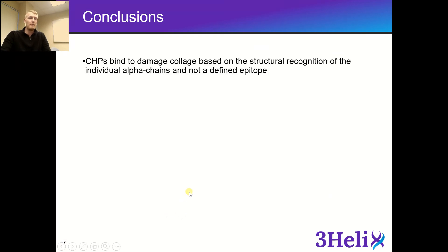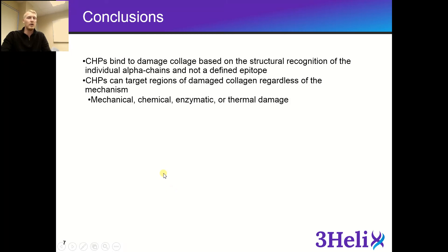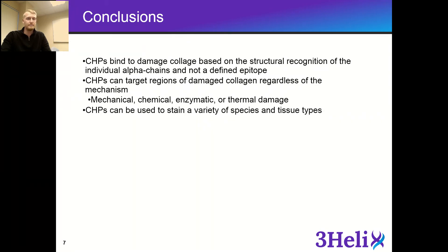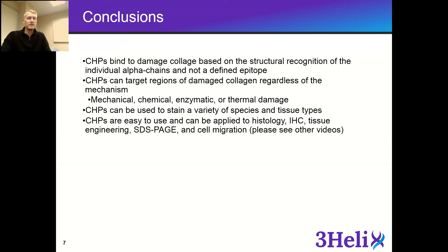In conclusion, CHPs are able to bind to damaged collagen based on structural recognition of the individual alpha chains, and not a defined epitope like antibodies. CHPs can target regions of damaged collagen regardless of the mechanism — whether from mechanical overloading, chemical denaturation, enzymatic degradation, or even thermal damage. CHPs can be used to stain a variety of species and tissue types, due to the preserved collagen sequence throughout the collagen family and different species. Lastly, CHPs are very easy to use and can be applied for histology, immunohistochemistry, tissue engineering, SDS-PAGE, and even cell migration.